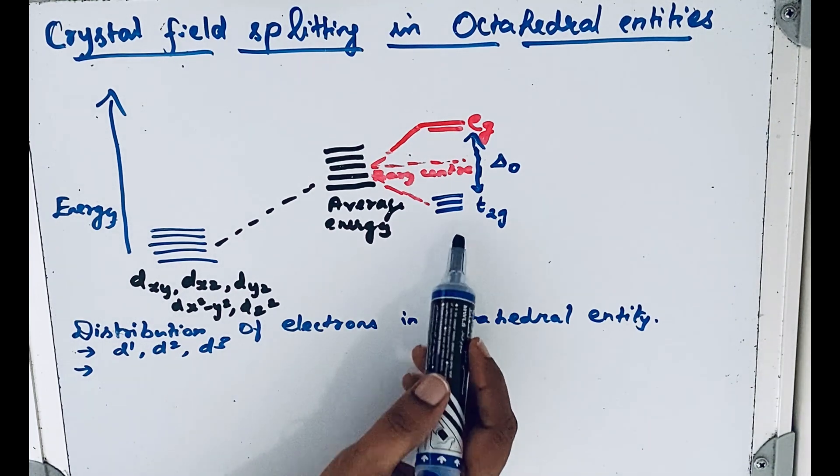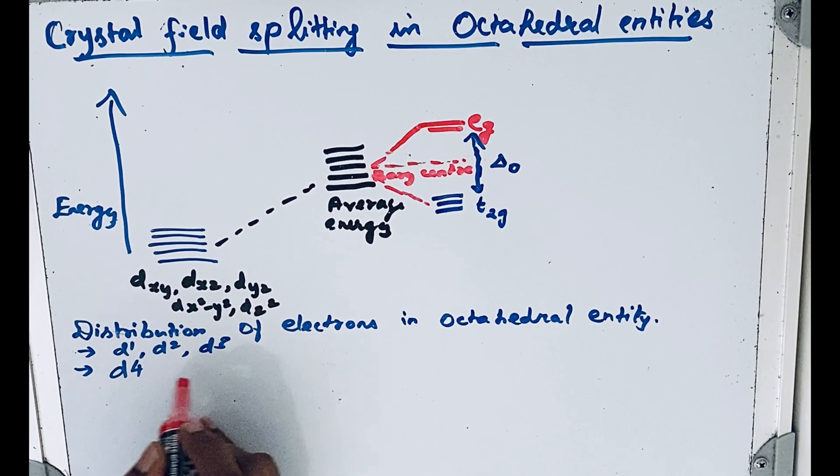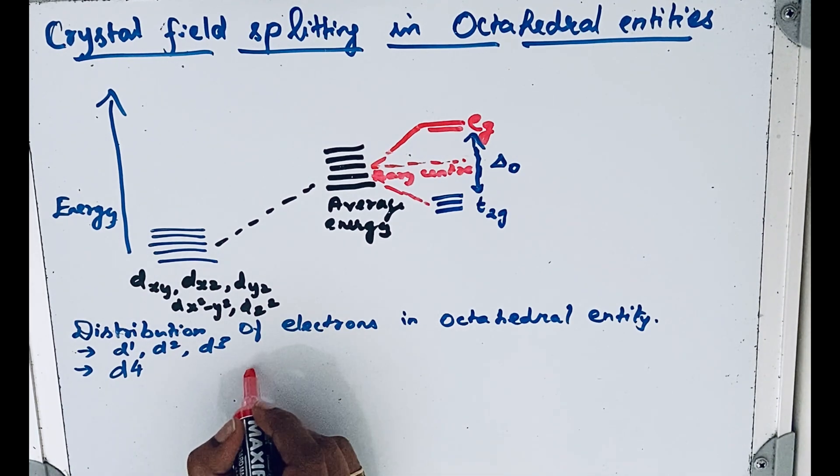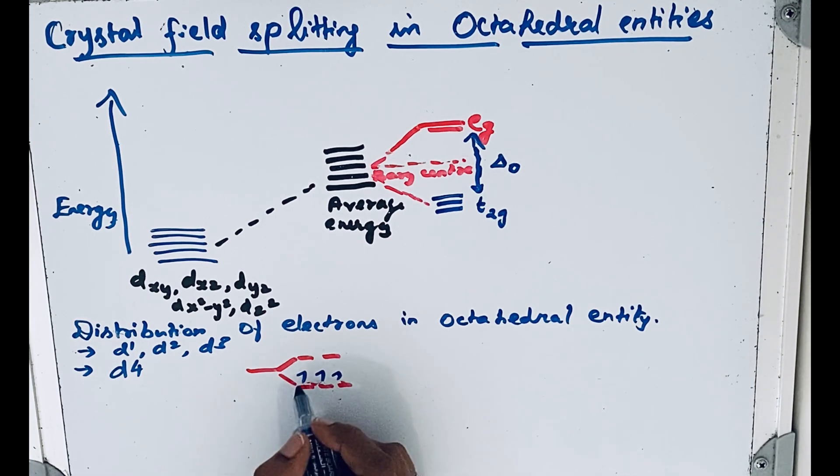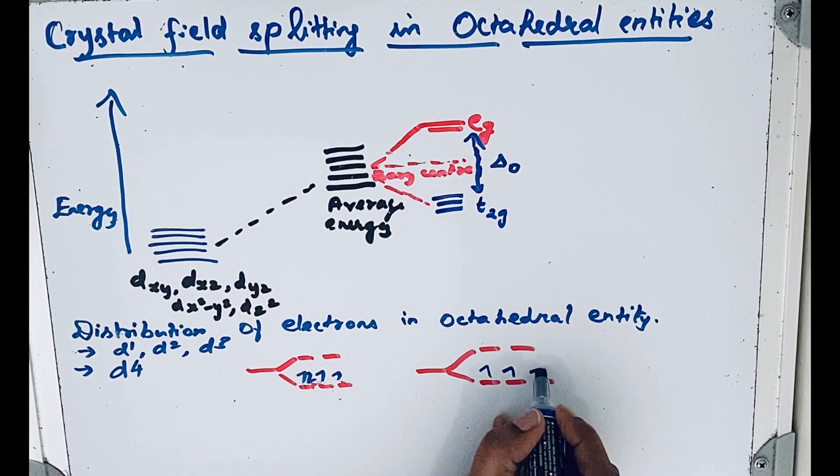But for d4 configuration, there are two possibilities. Here we have two orbitals at higher energy and three orbitals at lower energy. Electrons enter, and then the fourth electron can pair up here itself according to Hund's rule. Or another possibility is that the fourth electron can enter the higher energy orbital.